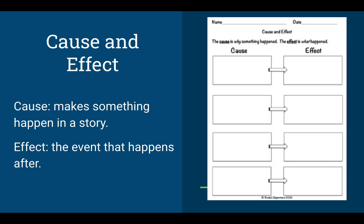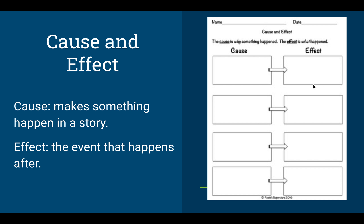Now friends, this is also a review — we're doing cause and effect. Cause means it's what makes something happen in the story, and the effect is what happens after. So the cause could be: my shoe is untied. And what would the effect be? I would trip and fall.